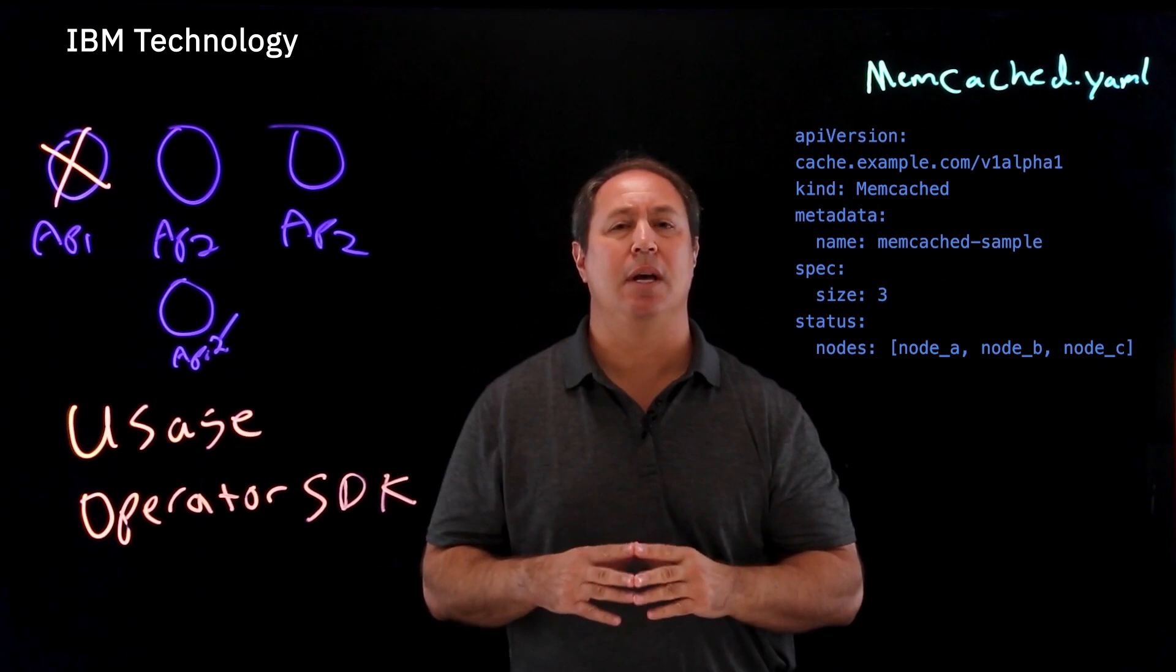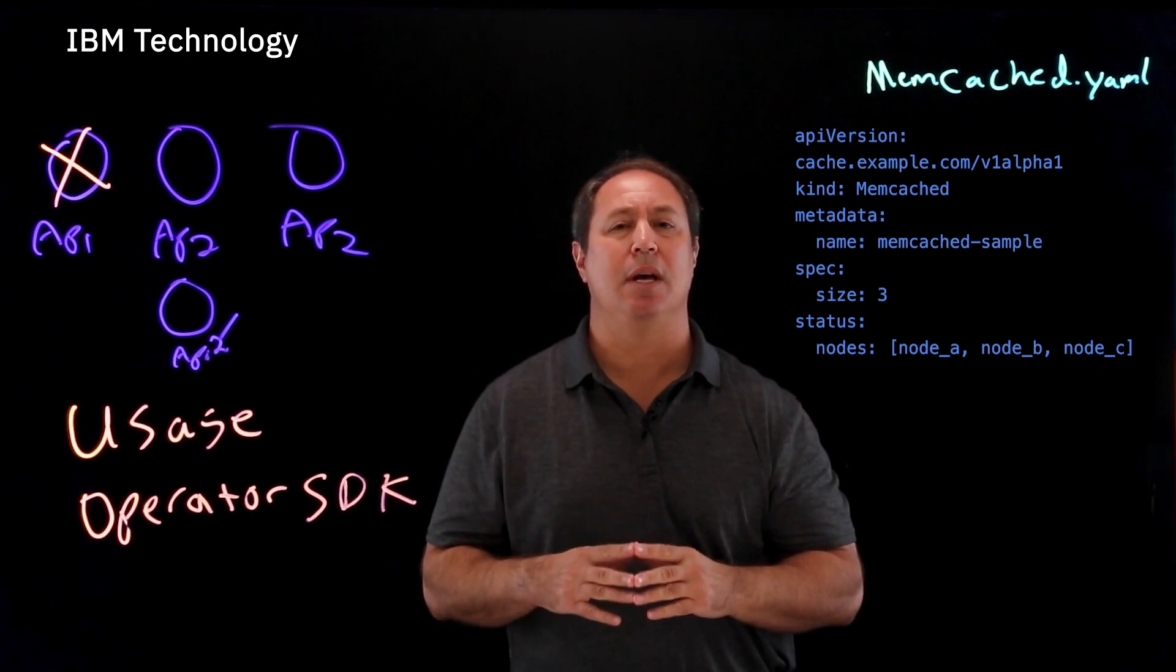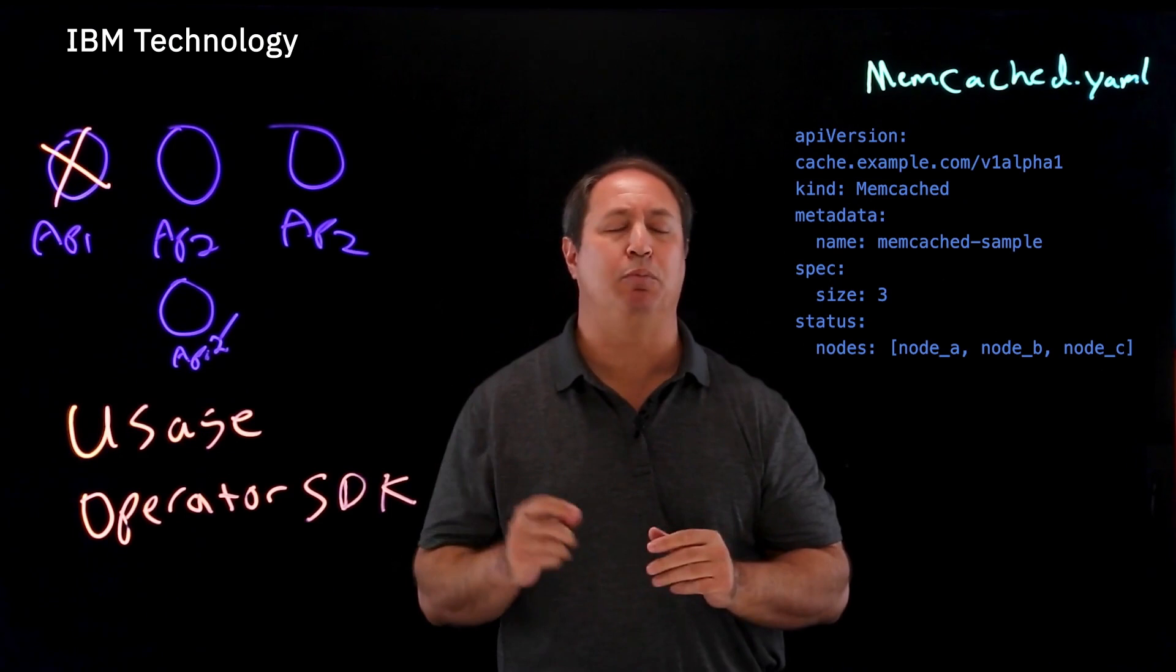If you already have Helm charts laying around, the operator SDK can take those Helm charts and turn them into an operator. If you already have Ansible playbooks, the operator SDK can take those Ansible playbooks and turn those into an operator.